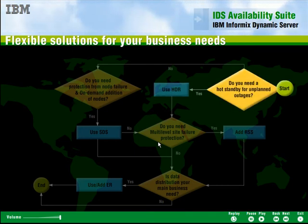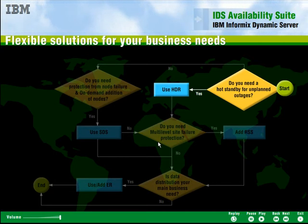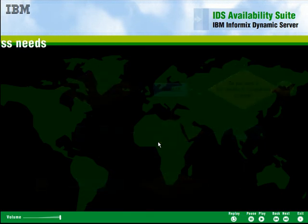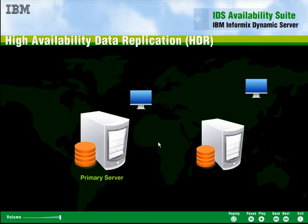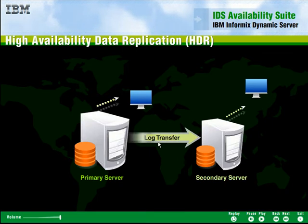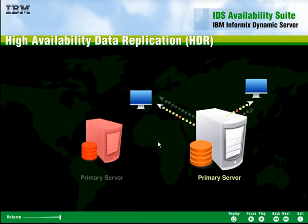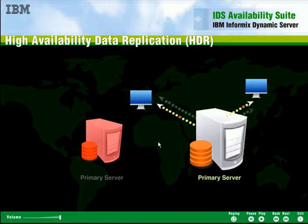The high availability data replication, or HDR, feature provides a single standby backup for failover in case of an unplanned outage. HDR is the cornerstone of the IDS high availability capabilities and consists of a two-node configuration for failover. If the primary server fails, the secondary server becomes the primary, delivering uninterrupted data availability while automatically reconnecting all of the clients.